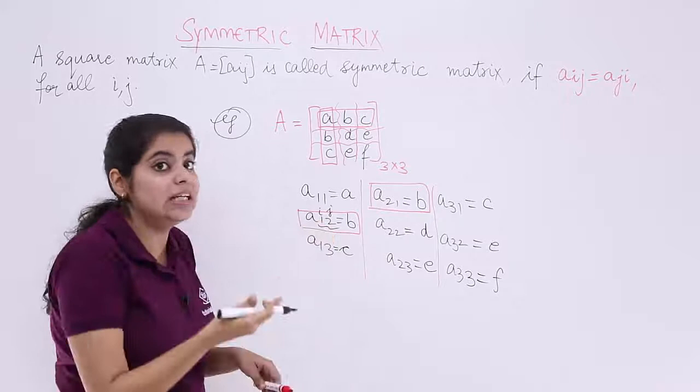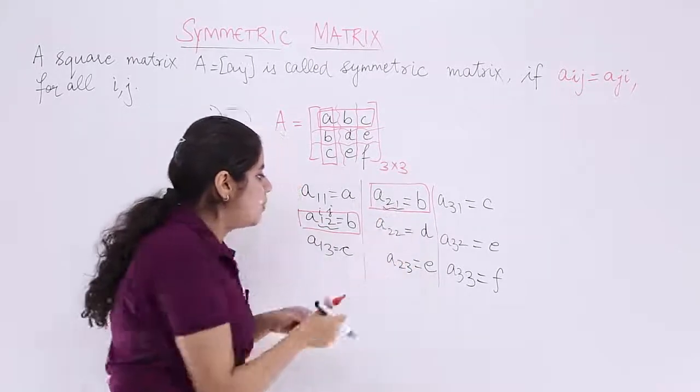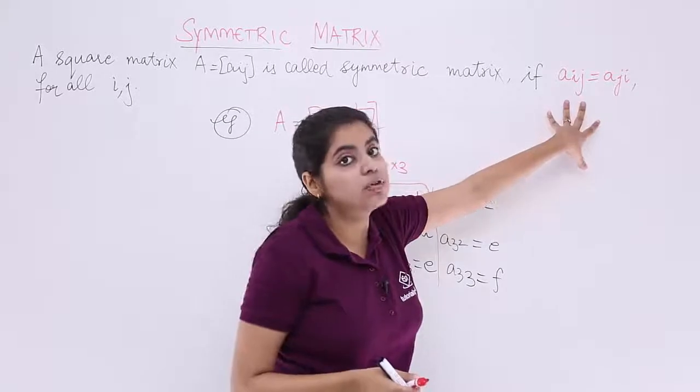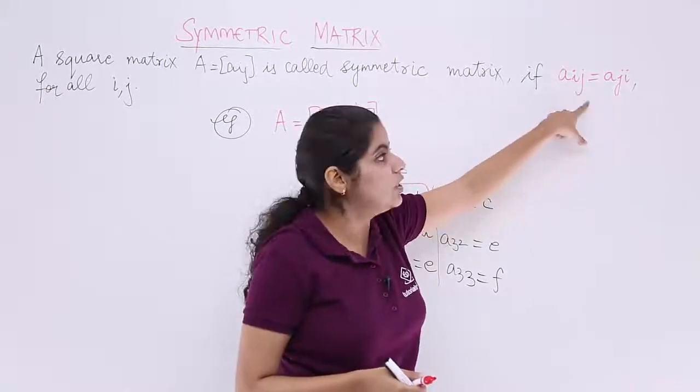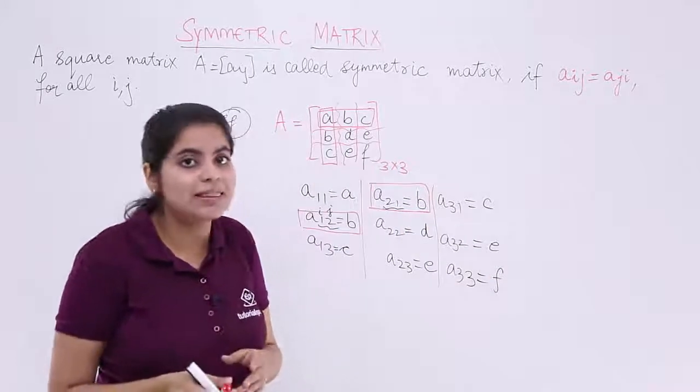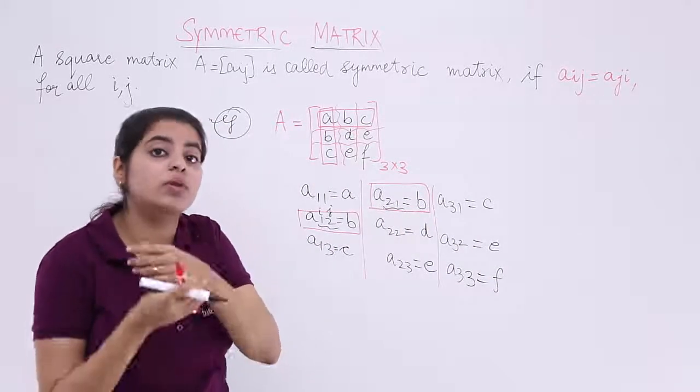12 is interchanged to 21. But the value you obtain is same, it is B. It is same as the definition that Aij equals Aji. You have just interchanged, and that does not follow only for one case. It follows for everything.